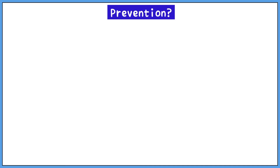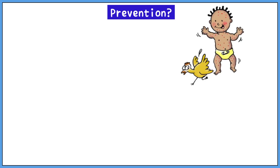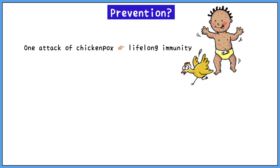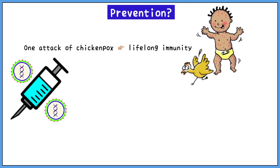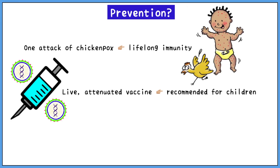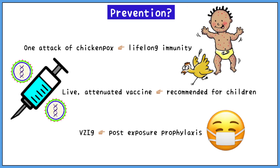VZV infections can be prevented. One attack of chickenpox in childhood results in lifelong immunity to the condition. The development of a live, attenuated vaccine has drastically reduced the incidence of chickenpox and is recommended for all children. In immunocompromised patients, varicella zoster immunoglobulin may be administered as post-exposure prophylaxis, as VZV infection can cause encephalitis and pneumonia in immunocompromised individuals.